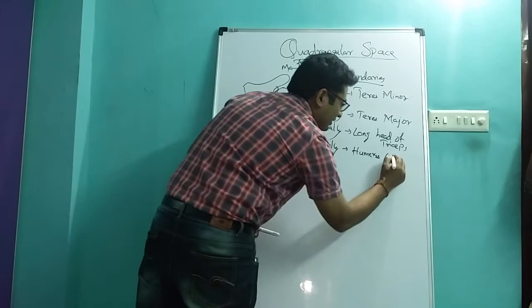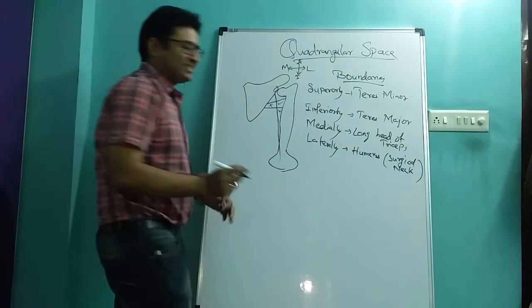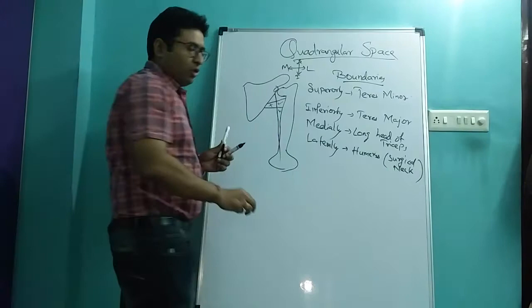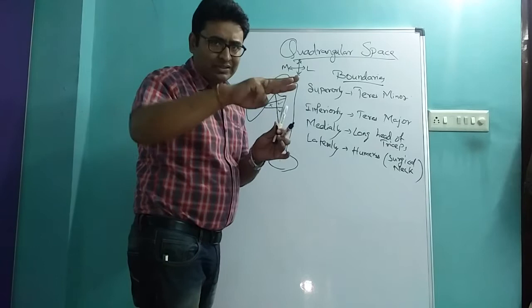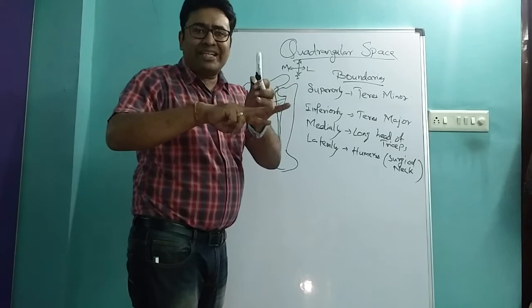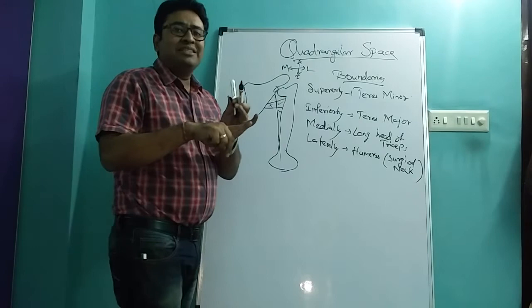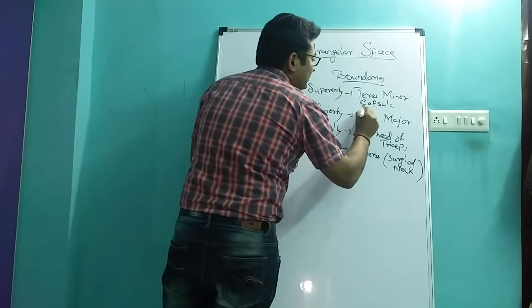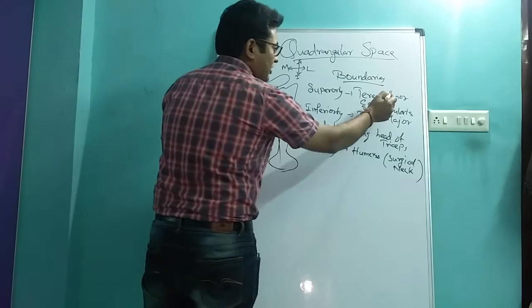So you have to remember this surgical neck. Now this was about the boundary. Superiorly, if you will go, the terris minor, along with the terris minor you will consider three structures: terris minor, then after the terris minor the second structure is capsule of shoulder joint, and then after that is subscapularis. So superiorly there are three structures: terris minor, capsule, and subscapularis. Terris major is inferior.